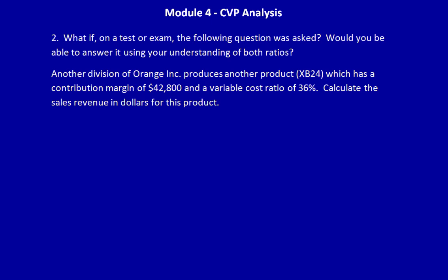The formula is always the same. Sales revenue makes up 100% of the calculation for the ratios. Variable costs, both production and non-production, equal the variable cost ratio. In this case, 36%. Using this, we can calculate the Contribution Margin Ratio.